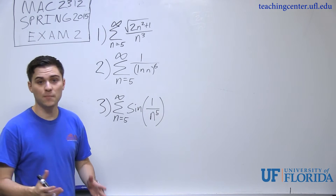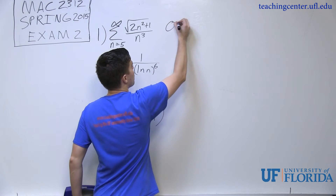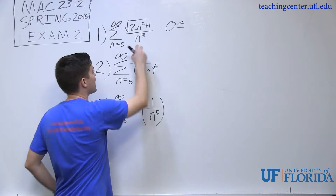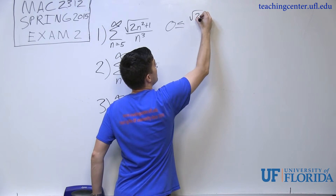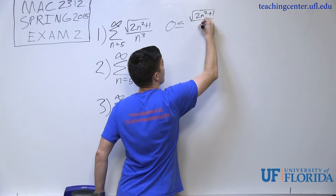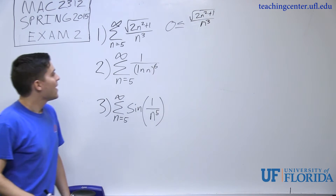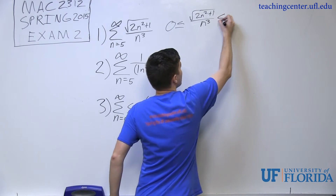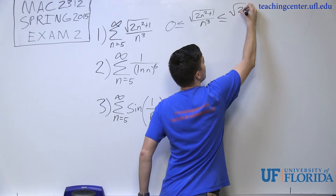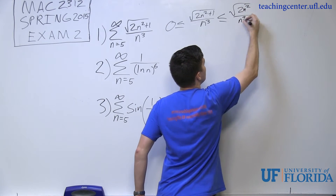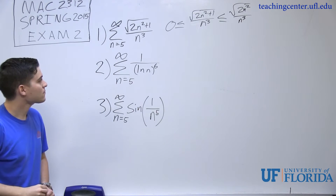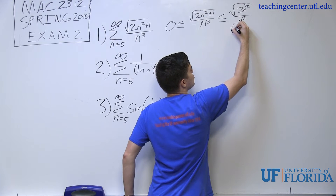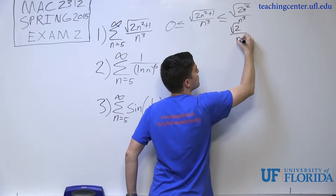My guess is that this series is going to converge, so I'll assign this as my a_n: √(2n² + 1) / n³. I'm going to compare it to √(2n²) / n³. Simplifying that, I get √(2n) / n³, which becomes √2 / n².